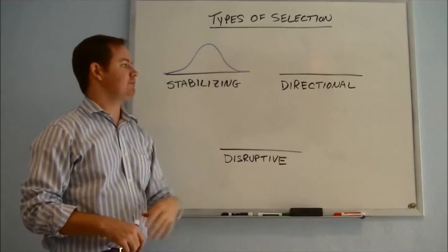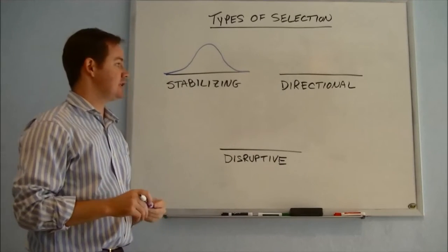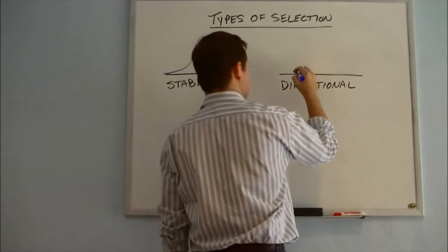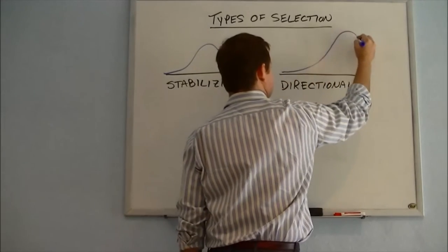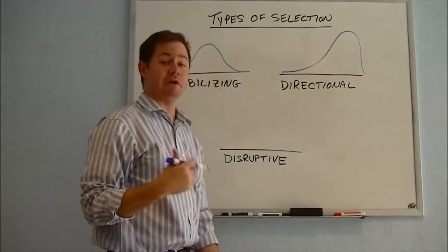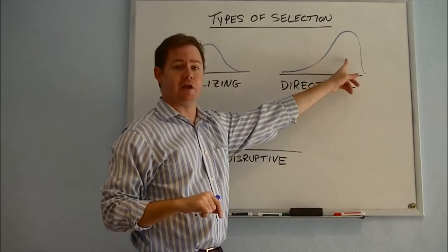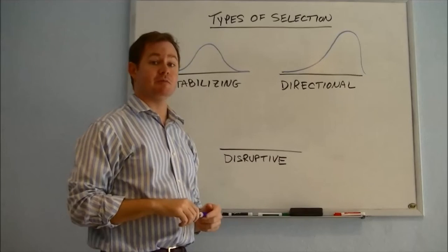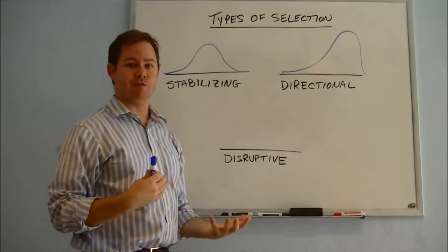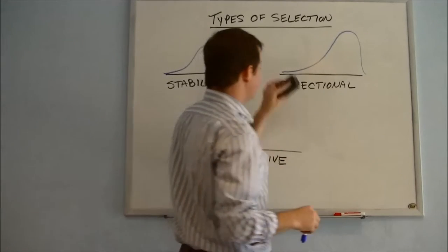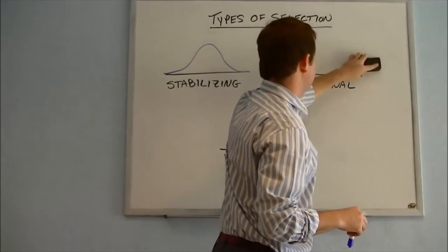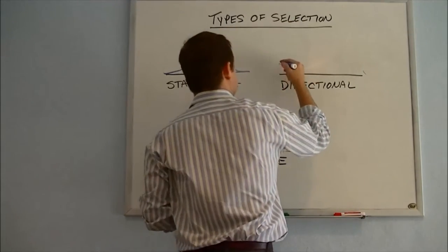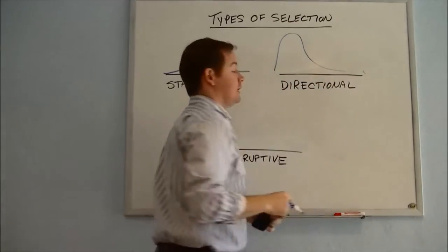Directional selection is when you have selection that takes place towards a certain direction. It could be something like this, where in terms of size, this would suggest that a larger species is more favored for survival. That might mean something that can defend itself better. Or you could also have directional selection in the other direction.